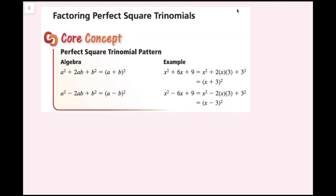Factoring perfect square trinomials. If you remember, our perfect square trinomial patterns are as follows: if we expand a plus b quantity squared, we get a squared plus 2ab plus b squared. And a minus b quantity squared is the same thing, except the middle term is negative. For the algebra example, x squared plus 6x plus 9 factors to x plus 3 quantity squared. This is what we'd get using the FOIL method or distributive property in reverse.